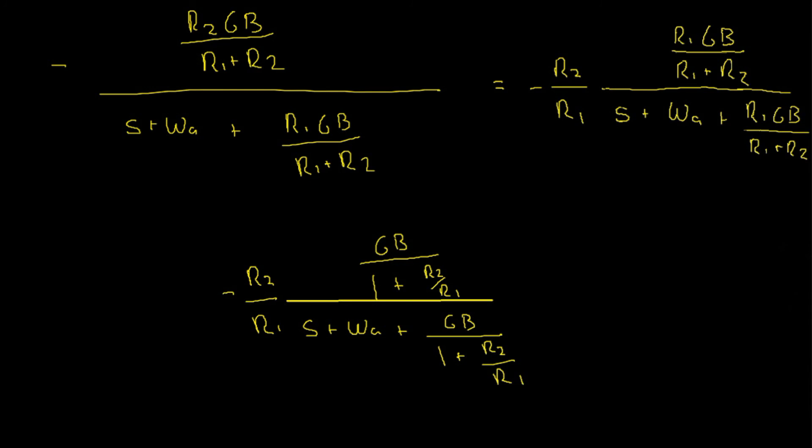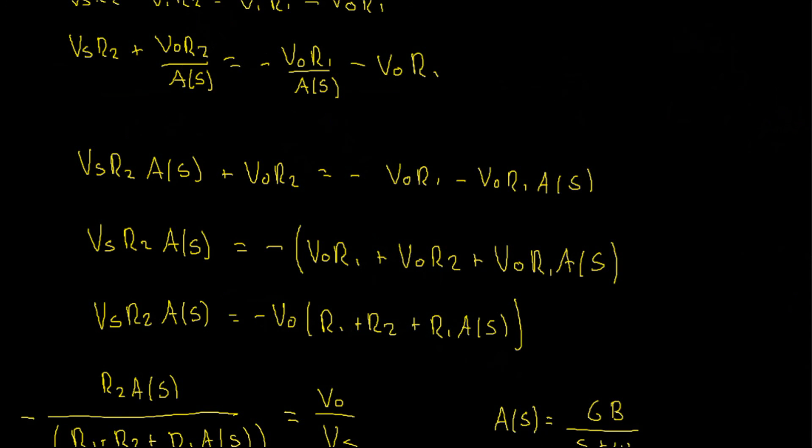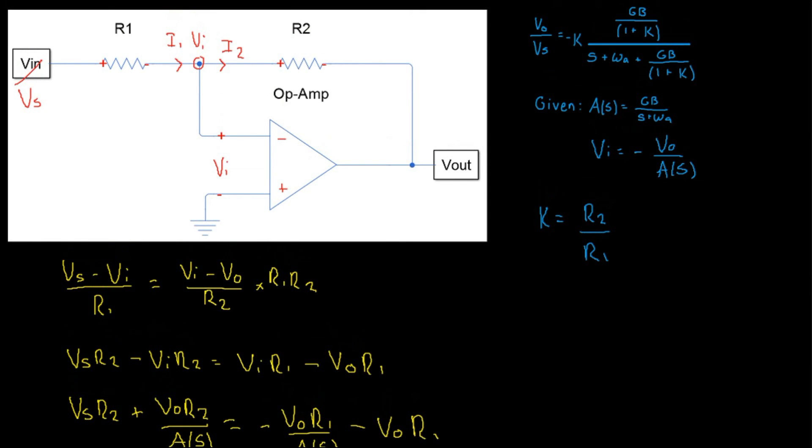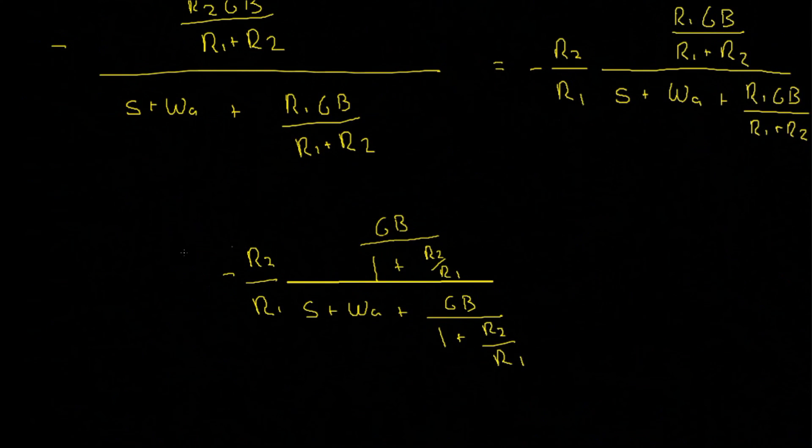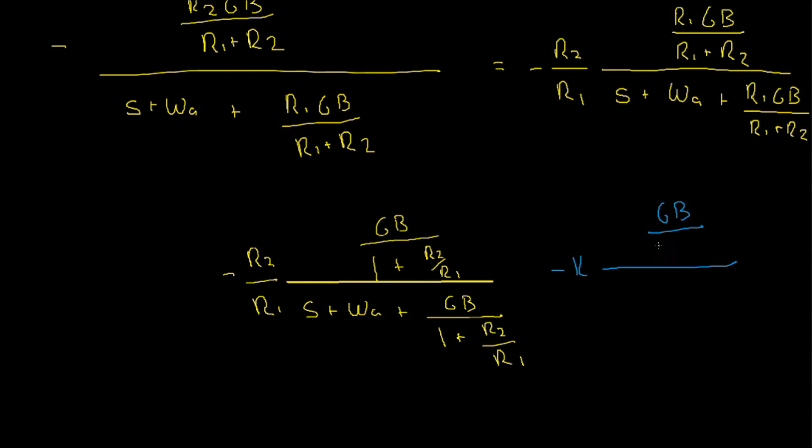There we go, so we have our original final answer. Now note that if we substitute in r2 divided by r1 in our equation for k, we would have negative k times gb, the gain bandwidth product, divided by 1 plus k, divided by s plus omega_a plus gb divided by 1 plus k, as required.